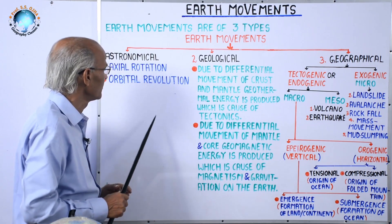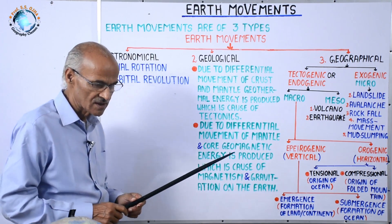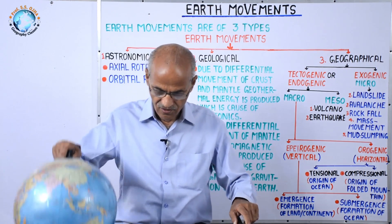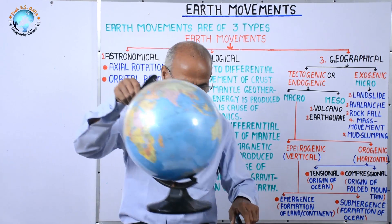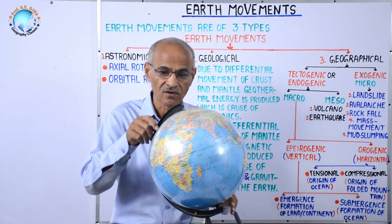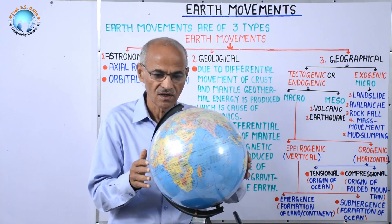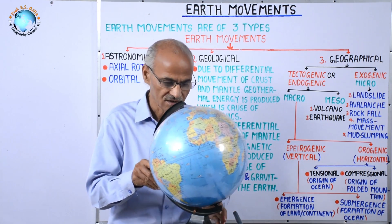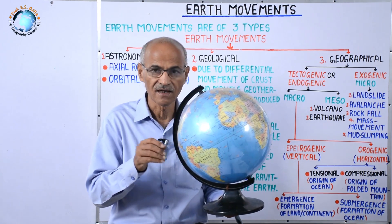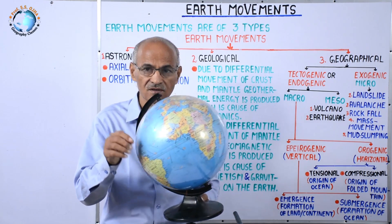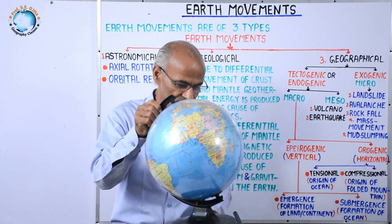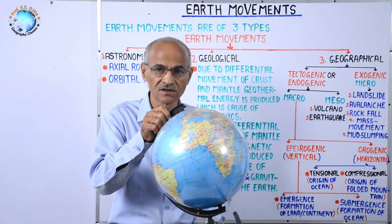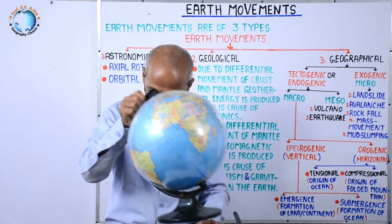In astronomical movement or motion, we have already learned that the earth has two motions — one is rotation on its axis, and second is its orbital motion around the sun. These two have been studied in detail in astronomy.